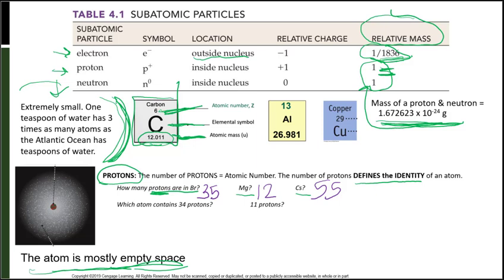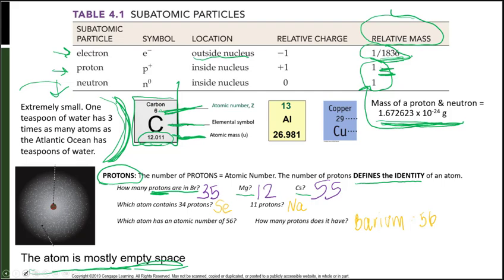Can you look at the periodic table and tell me which atom contains 34 protons and which one has 11 protons? The answers are Se, selenium, and Na, sodium. Which atom has an atomic number of 56, and how many protons does it have? That's barium, Ba. If its atomic number is 56, it also has 56 protons.